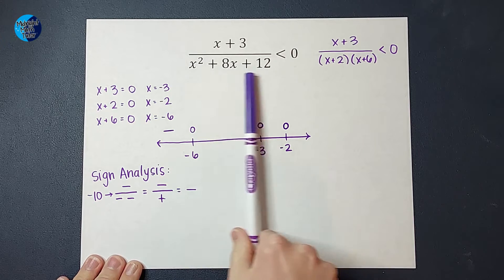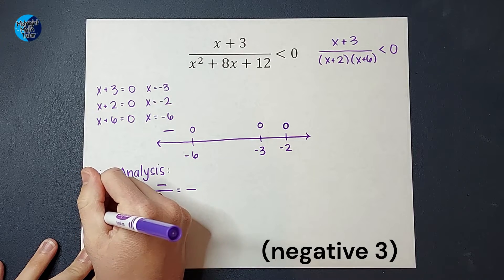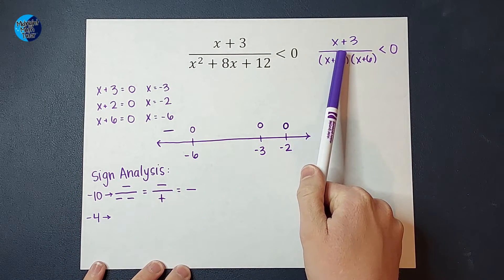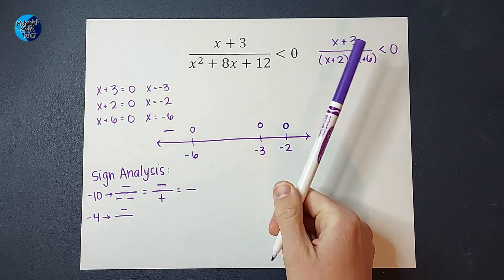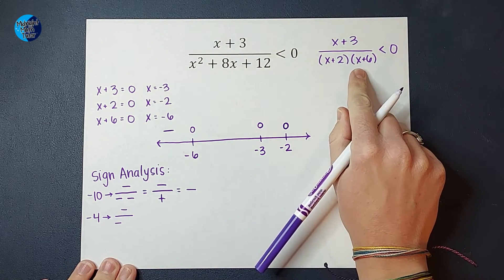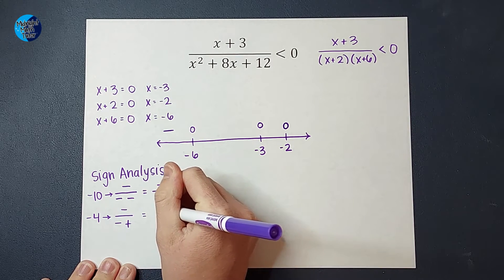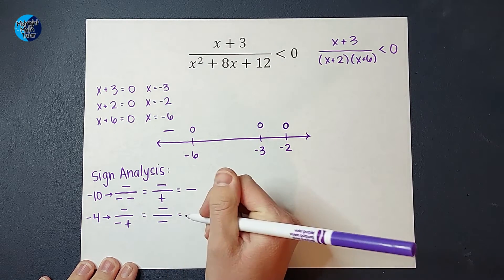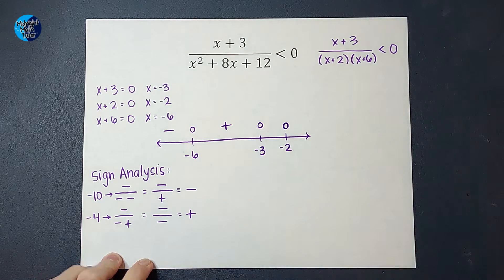All right, now I'm going to pick a number between negative 6 and 3. Let's just pick negative 4. So when I plug in negative 4, I get negative 4 plus 3 on top, which would be negative. And on bottom, I get negative 4 plus 2, that would be negative. And negative 4 plus 6, which would be positive. So then on top, I've got a negative. On bottom, I've got a negative times a positive, which is negative. And then I've got a negative divided by a negative, which is positive.